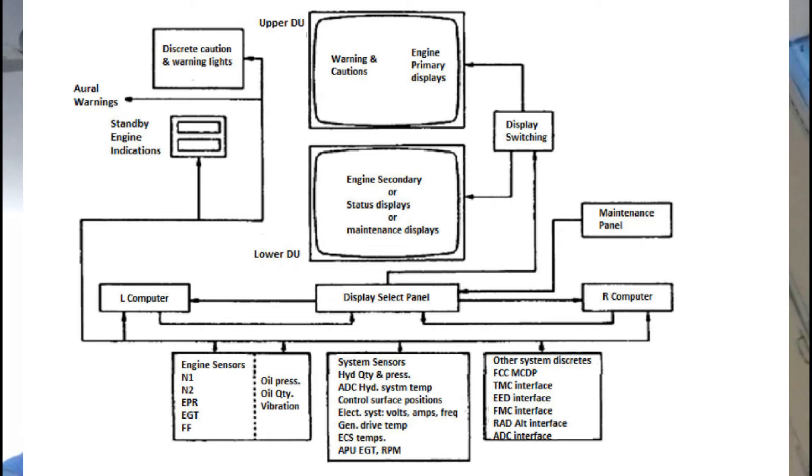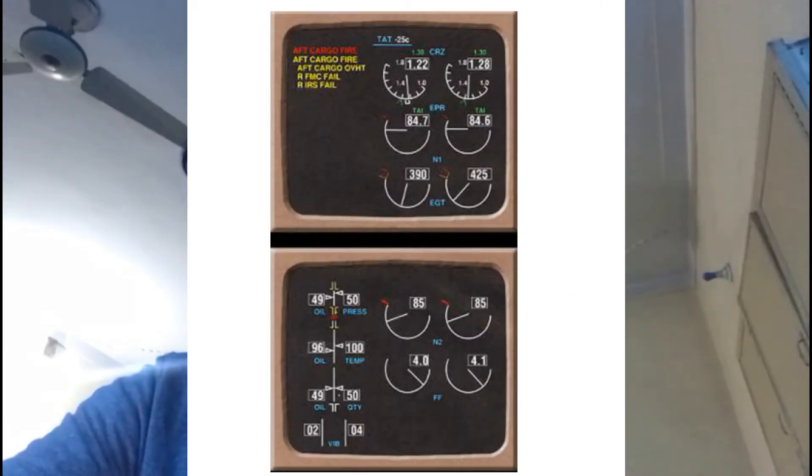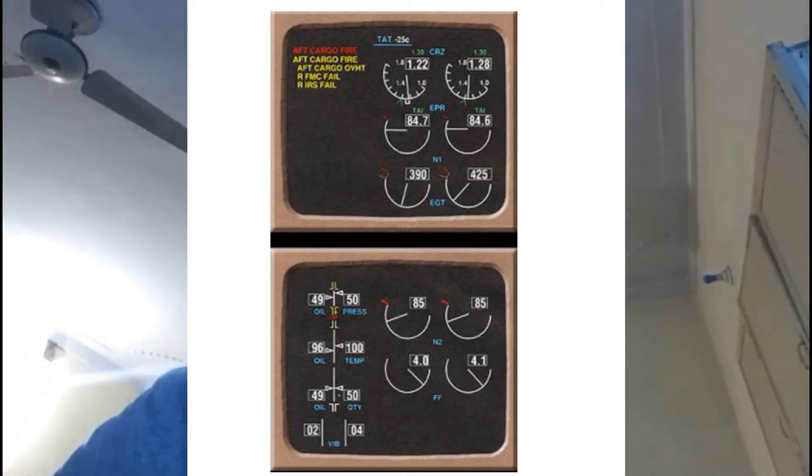In conjunction with the engine indicators and a remotely located panel for selecting maintenance data displays, the system provides the flight crew with information on primary engine parameters full-time and with secondary engine parameters, warnings, cautions, and advisory alert messages as required. The display units provide a wide variety of information relevant to engine operation and other automated systems. They utilize color shadow masks, CRTs, and associated card modules.